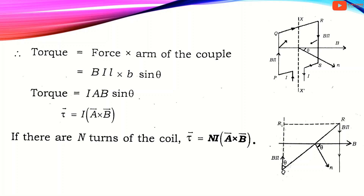Therefore, torque is equal to BIL sin theta. Here, length into breadth is the area A. So torque equals I times A cross B, written as I times vector A cross vector B. For a coil with N number of turns at angle theta, the torque experienced is equal to N I vector A cross vector B.